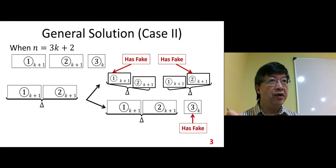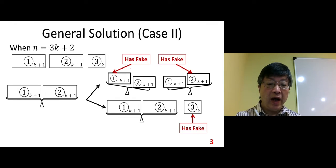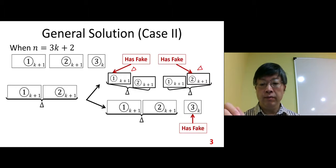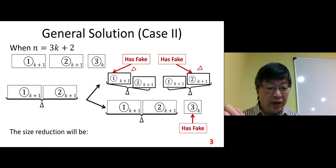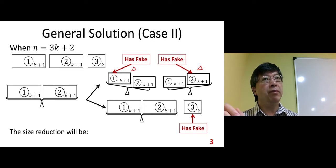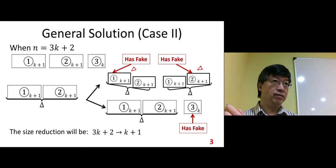Adversary argument again: for the worst case, the fake should be in pile one or pile two, not pile three, since those piles have size k plus 1 which is larger. So the size reduction for case two goes from 3k plus 2 to k plus 1.